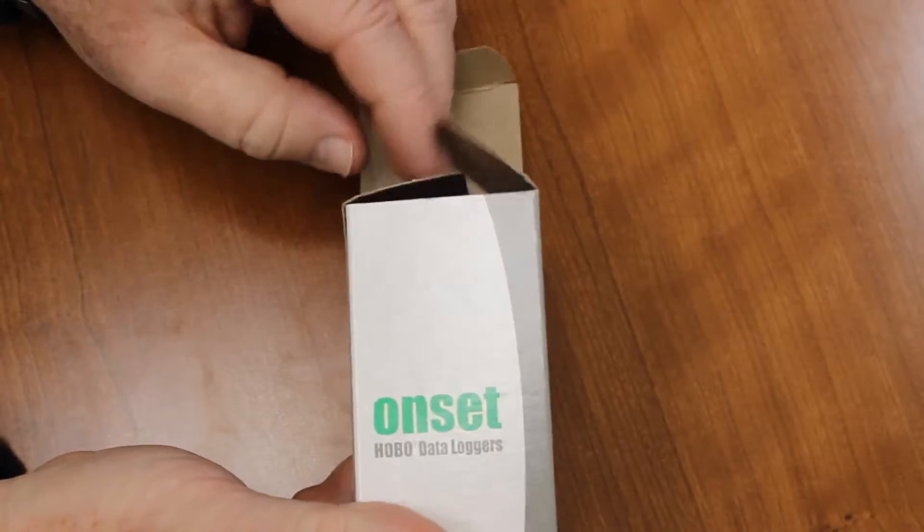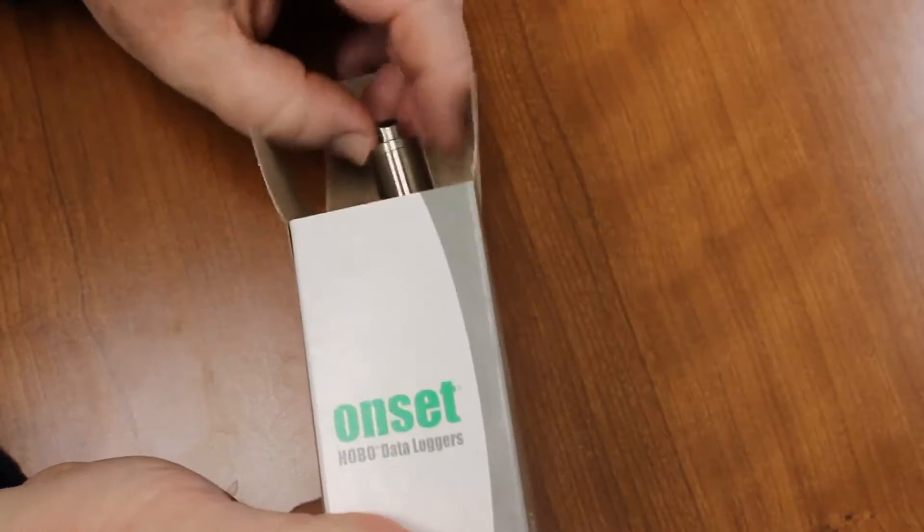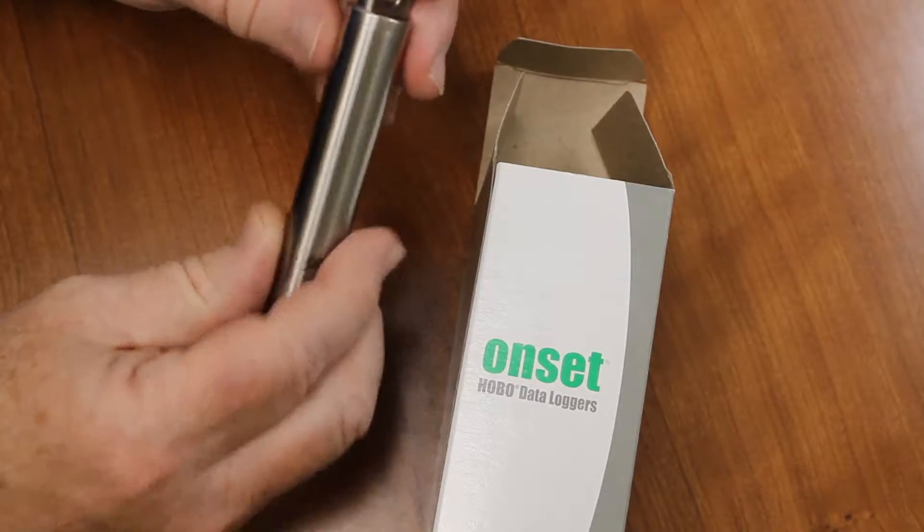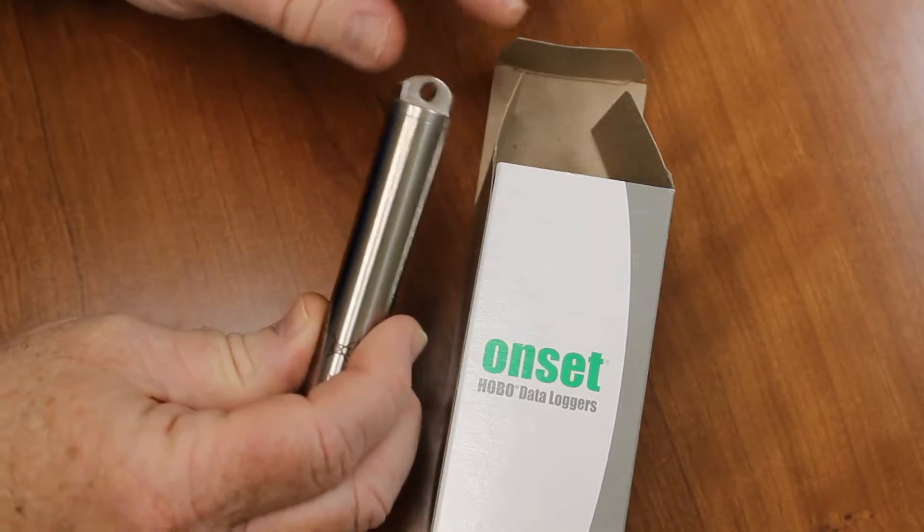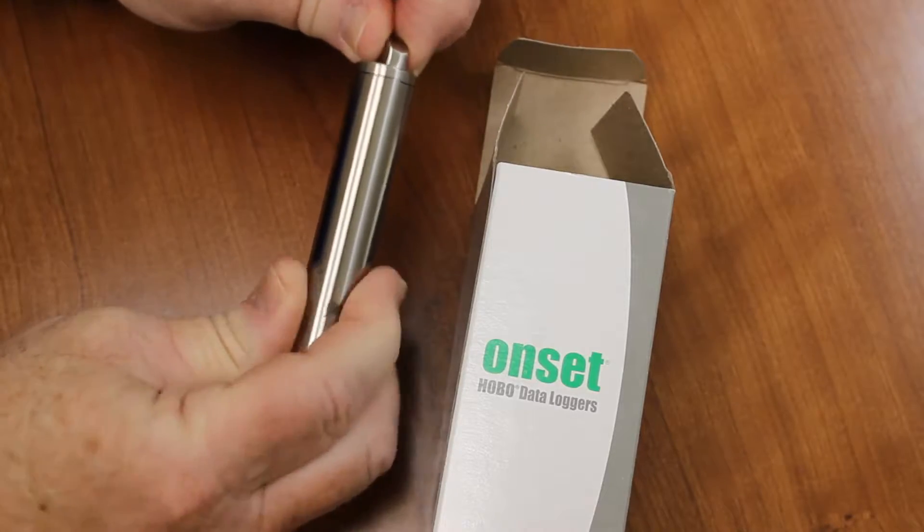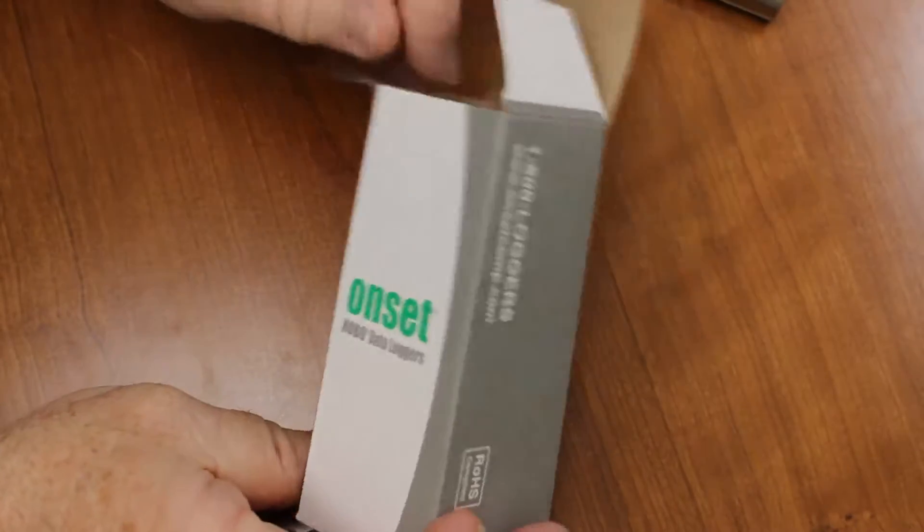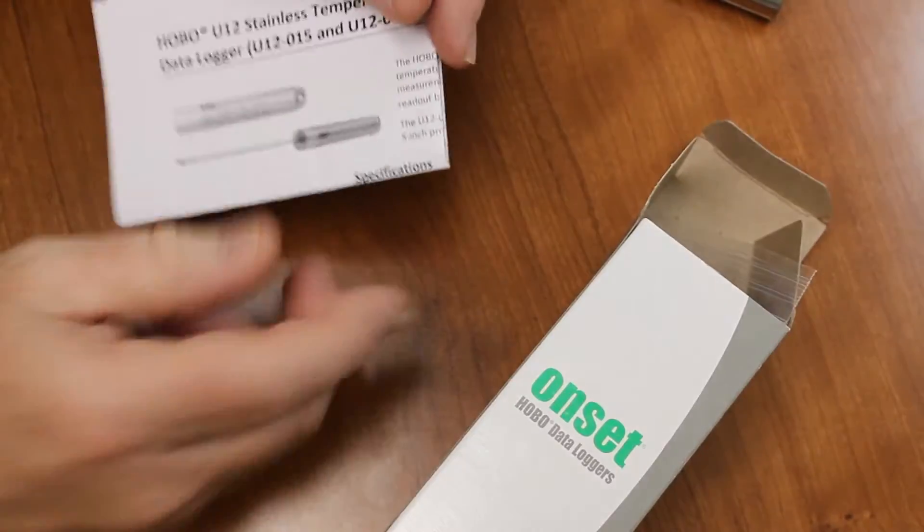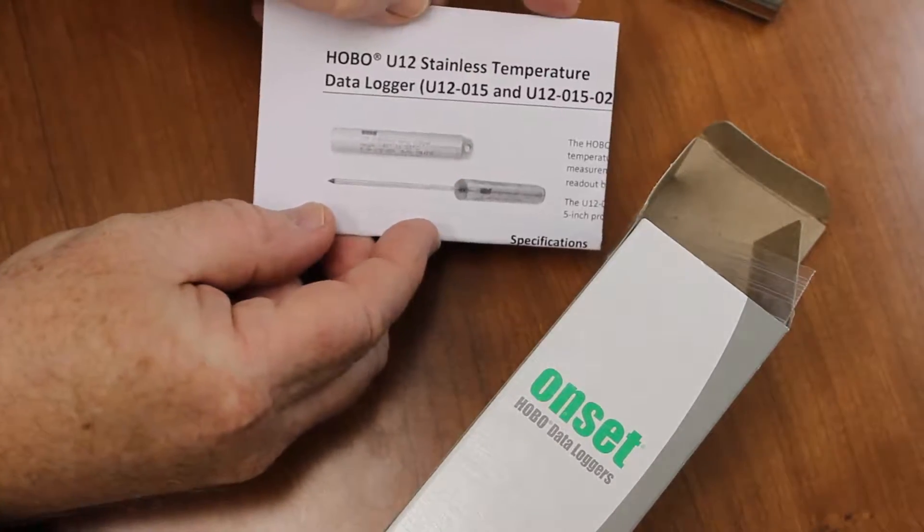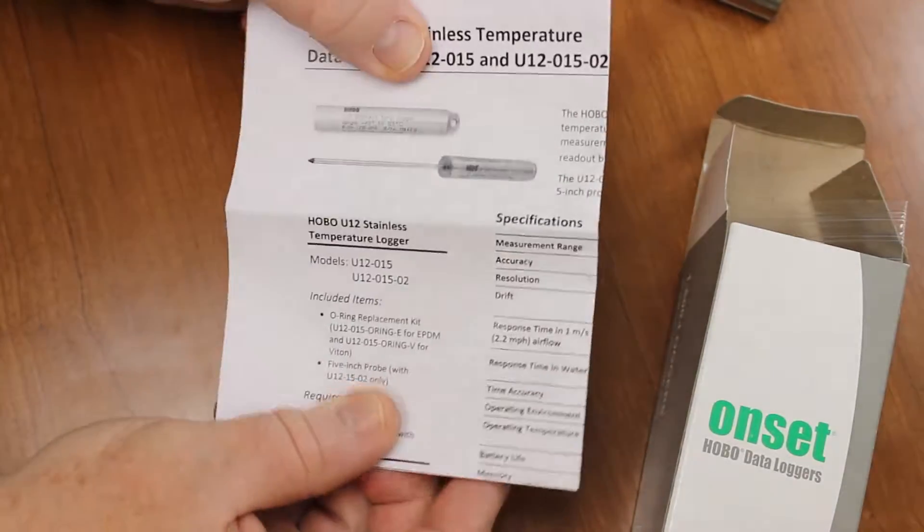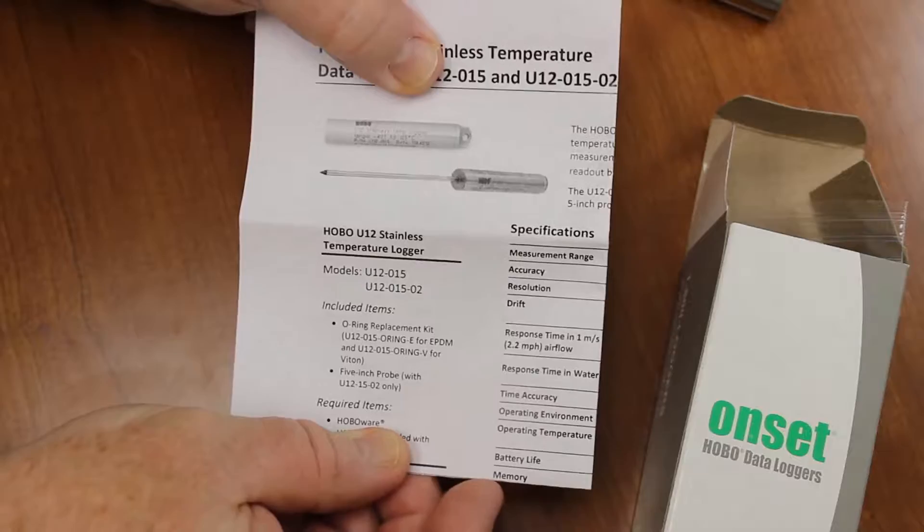I'm going to open this up. Here is the data logger. It comes fully assembled with the cap on and the O-ring pre-lubricated. You also get a user's manual. I suggest reading through this just for some tips on how to use the product and how to maintain it. It has the specifications in it as well.